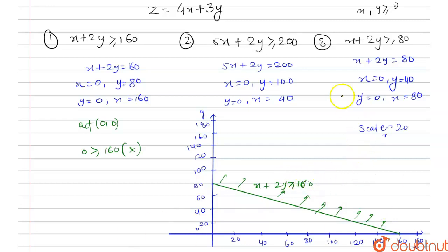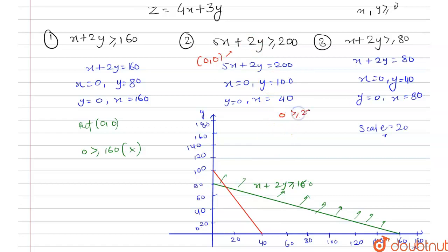Now we plot the curve of 5x plus 2y ≥ 200. When x equals 0, y equals 100, and when y equals 0, x equals 40. Putting the origin (0,0) gives 0 ≥ 200, which is also not possible. So this curve occupies the region in which the origin does not lie.